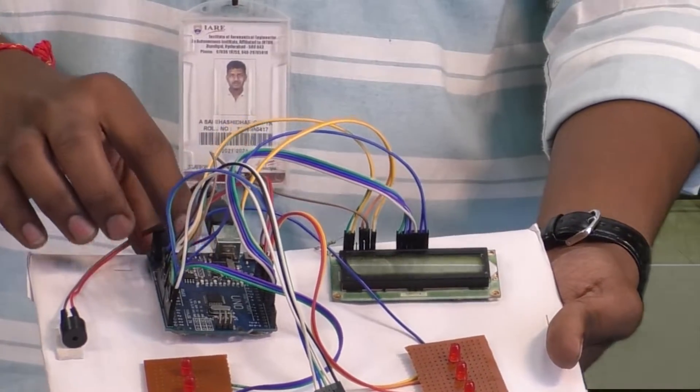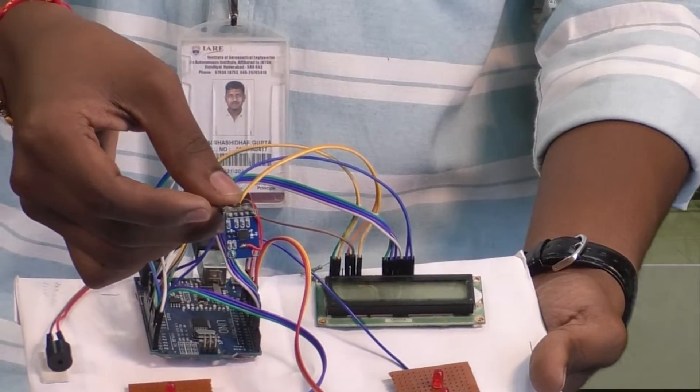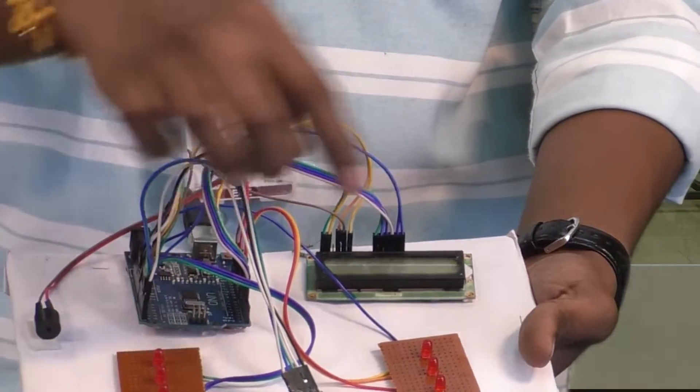I have developed a project called Automatic Bike Turning Indicator. It contains an Arduino and LCD display, the ADXL335 accelerometer sensor and LED sections.